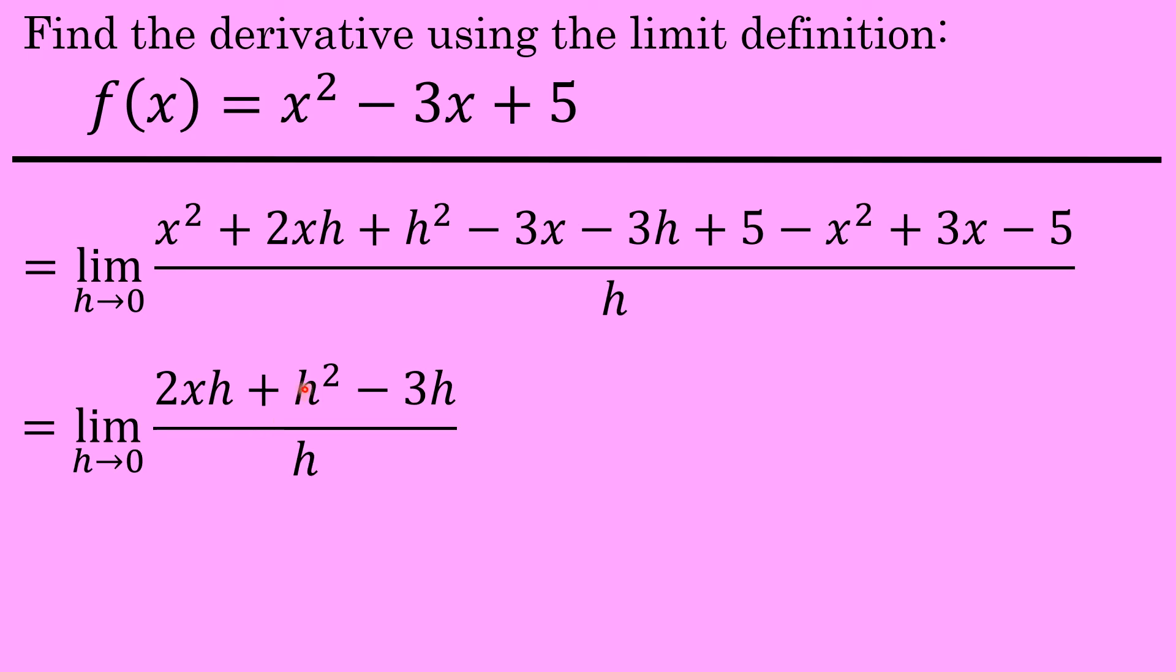Now notice that all three terms include a factor of h. So the next thing I'll do is factor that h out to the front. That yields the limit as h approaches zero of h times the quantity of, if you take an h out of all three terms, 2x plus h minus 3, all over h.